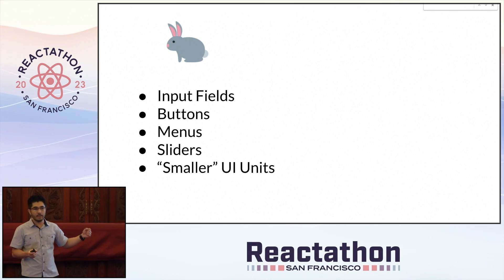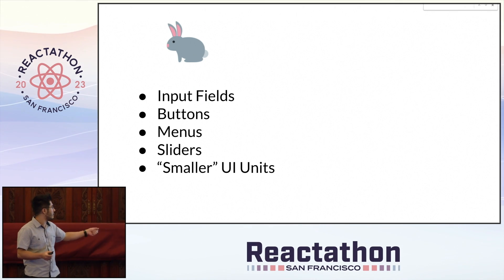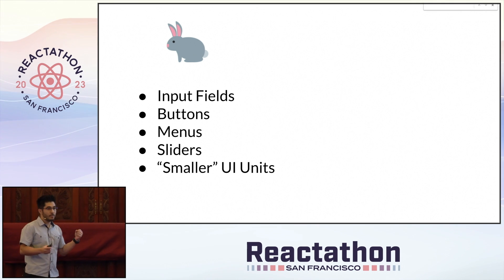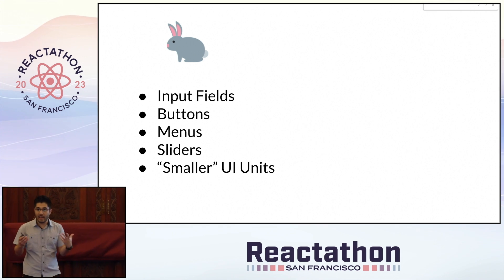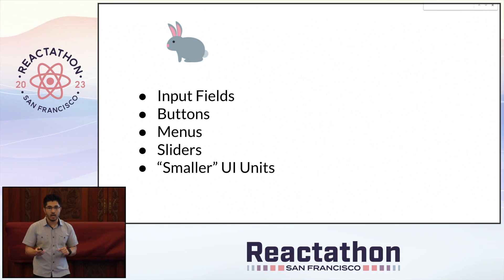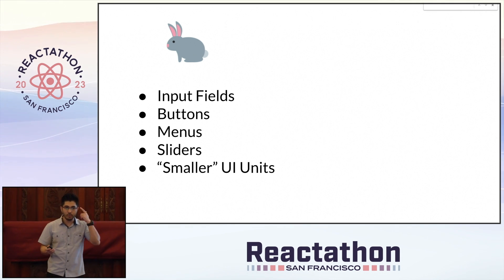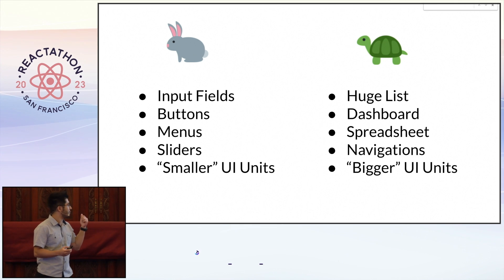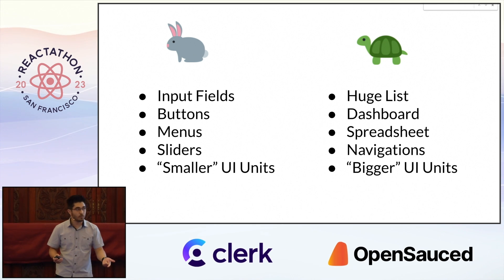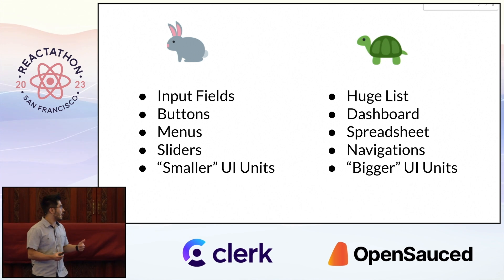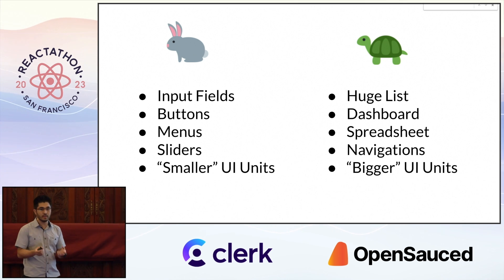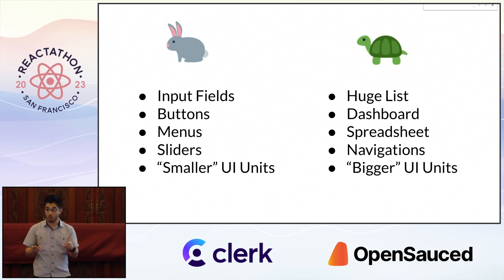If we take things like input fields, buttons, menus, sliders — these are examples of the fast parts. On the other hand, when we think of things like filtering a huge list, updating a dashboard, recalculating cells in a spreadsheet, or performing navigations, these are examples of the slow parts.